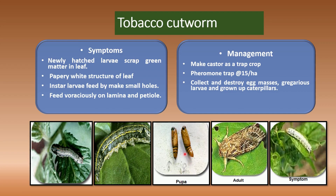Identification of tobacco cutworm: eggs are golden yellow and covered by silky hairs. Larvae are light green with a black head or black spots. Adults are brown in color with four wings — forewings are brown with wavy white markings, and hindwings are white with a brown patch along the margin.